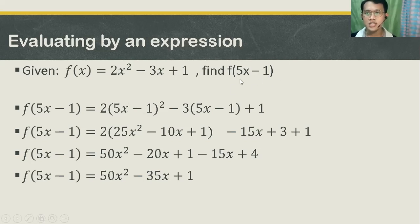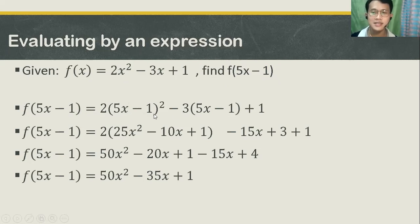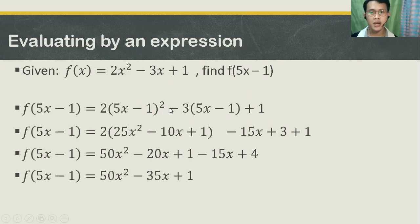You are going to substitute the expression 5x minus 1 to your value of x in the function. So your equation will turn into f of the quantity 5x minus 1, is equal to 2 times the quantity of 5x minus 1, squared, minus 3 times the quantity of 5x minus 1, plus 1. Then perform the operation.